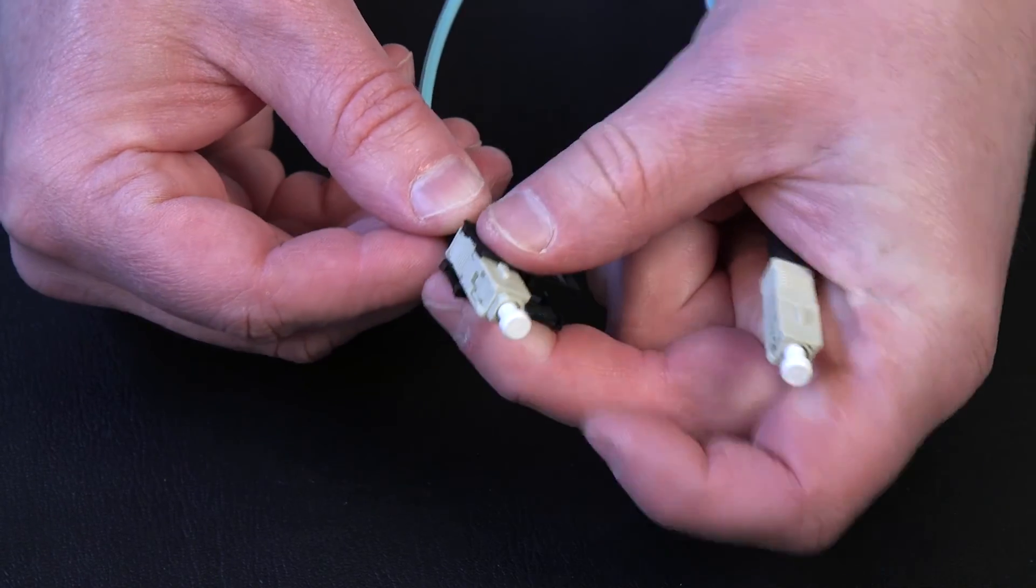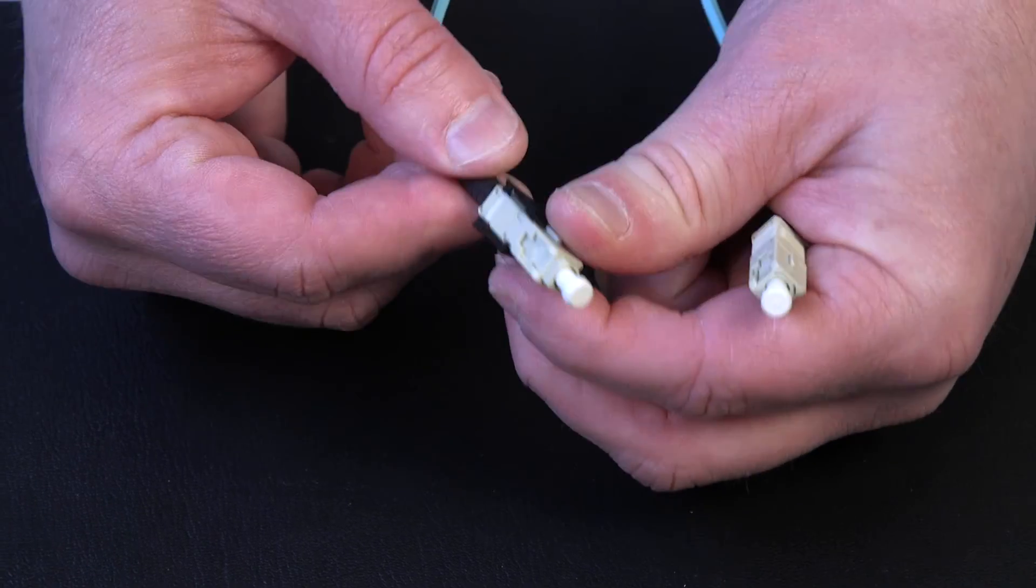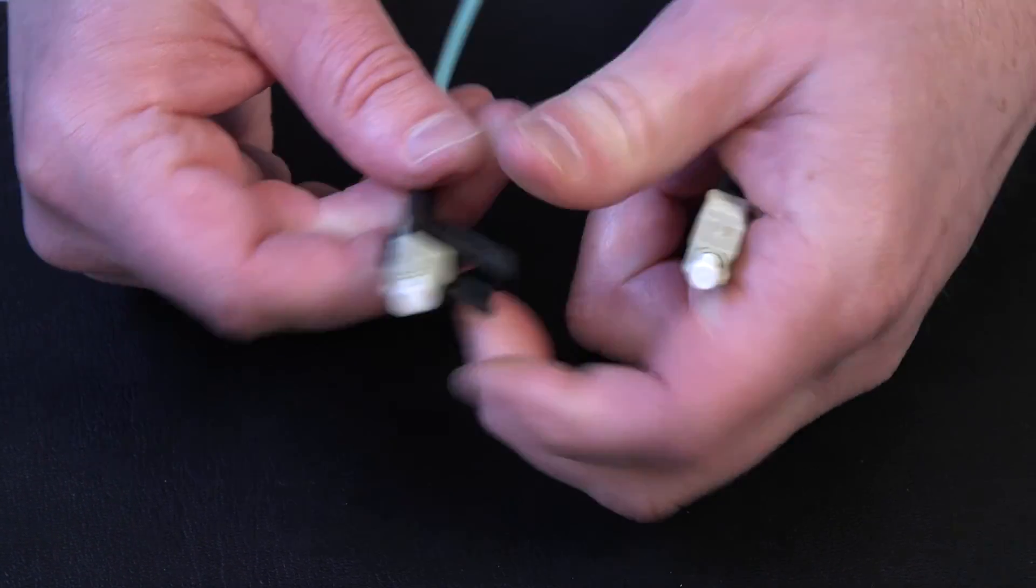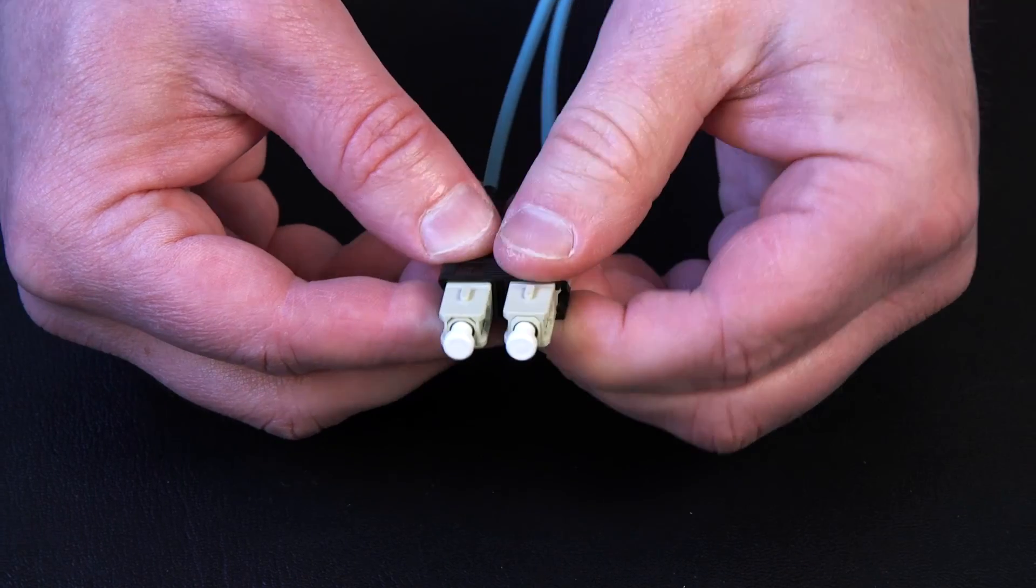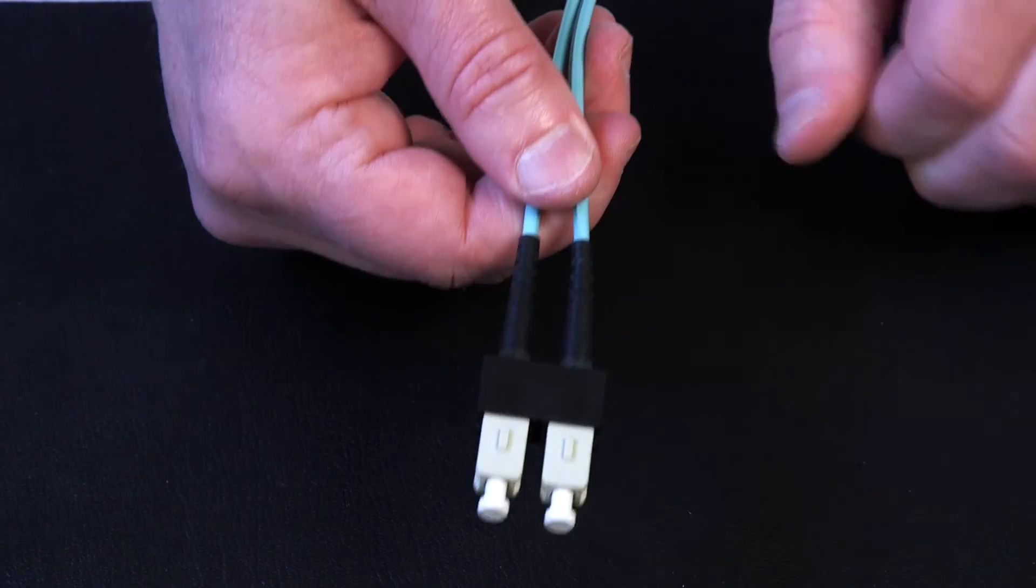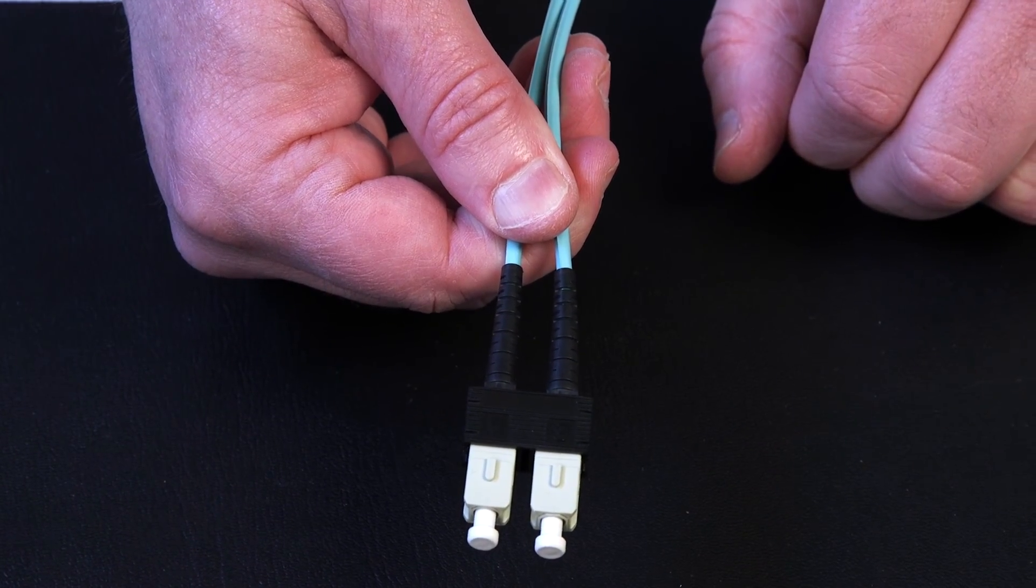If using duplexing clips, place the two mated connectors onto half of the clip housing in the correct polarity position. Then, place the other half of the clip housing on top of the connectors, snapping it into place.